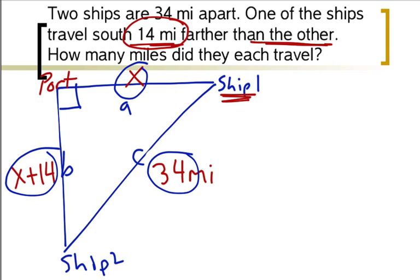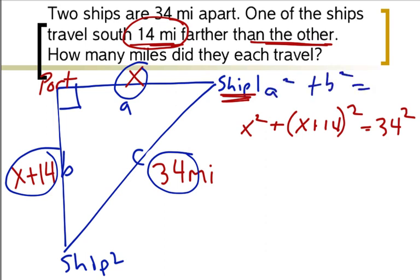So we go ahead and write, it's going to be X squared plus X plus 14 squared equals 34 squared. And so now we actually are using the Pythagorean Theorem again, which is A squared plus B squared equals C squared.